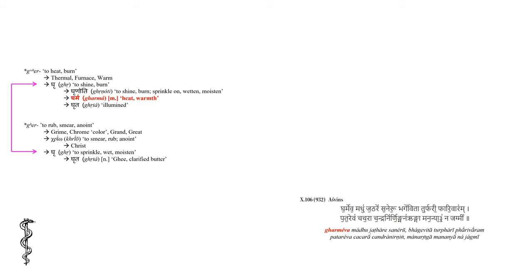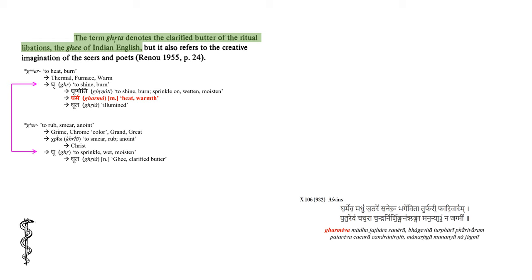The root Gr has also been derived from another root bearing the sense to rub, smear, and anoint, and gives us our words grime, chrome, grand, and great. In Greek we get the word Krio, meaning to smear, rub, and to anoint, from which we get the English word Christ. And the Sanskrit root Gr, to sprinkle, wet, and moisten, from which we get the noun Gritta, ghee or clarified butter. Recall from earlier, Stahl, citing Renaud, wrote: the term Gritta denotes the clarified butter of the ritual libations, the ghee of Indian English, but it also refers to the creative imagination of the seers and poets, signaling to us that when this term is employed, it is simultaneously more than just a yellow liquid being sprinkled to nurture flames.